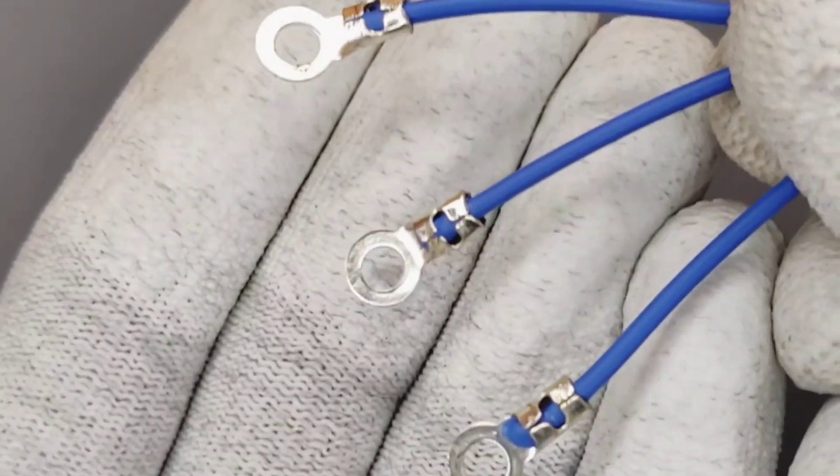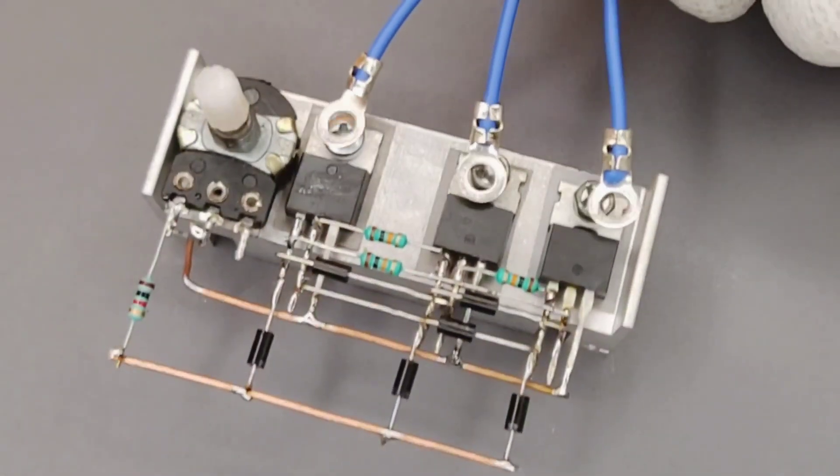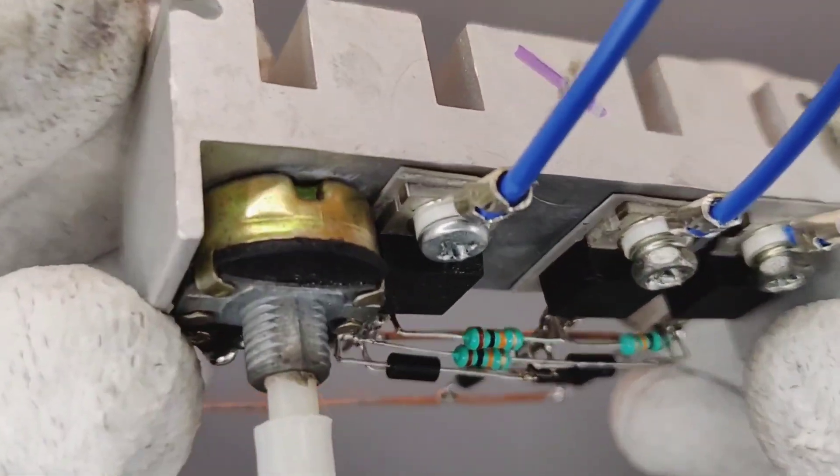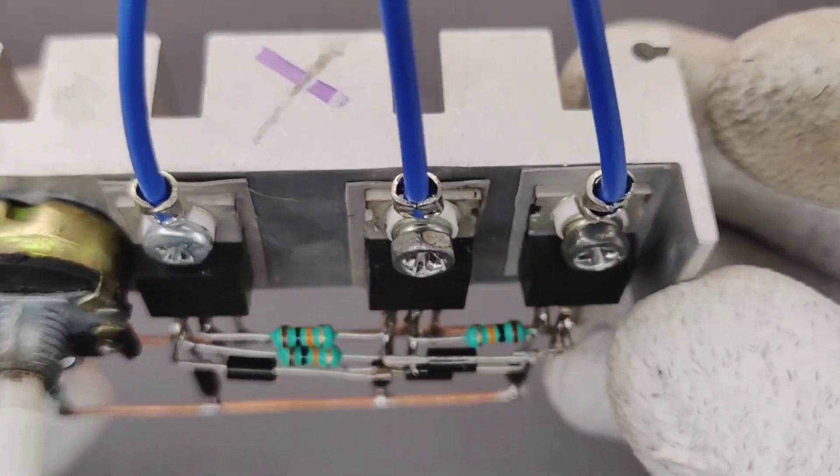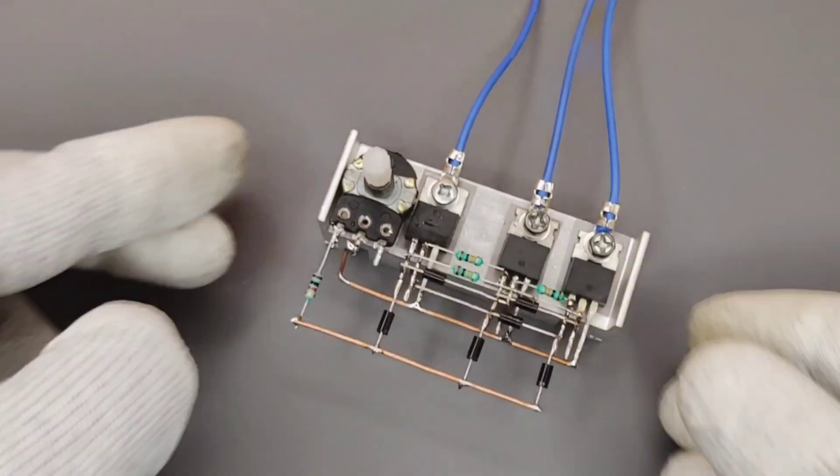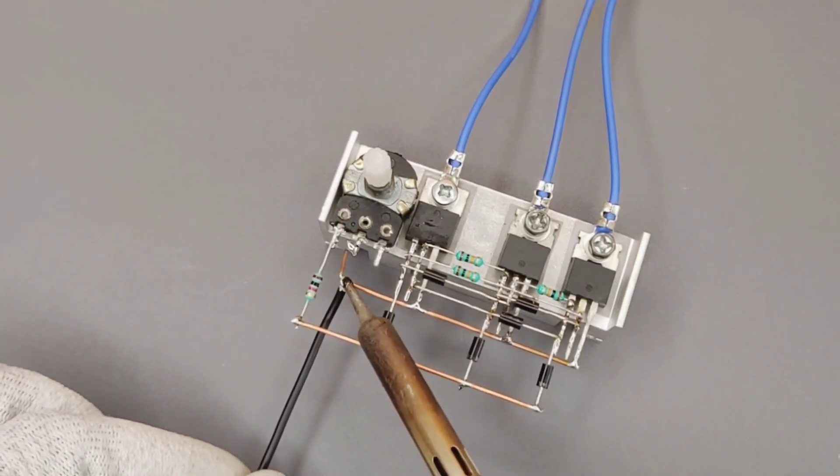Now take these 5mm thimble connected wires and connect each with MOSFET body. Now connect DC negative with pin 2 of potentiometer.